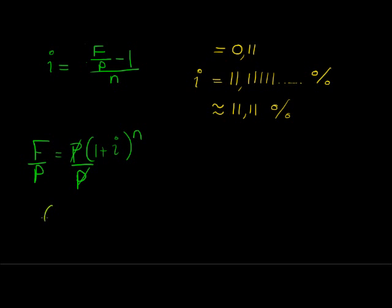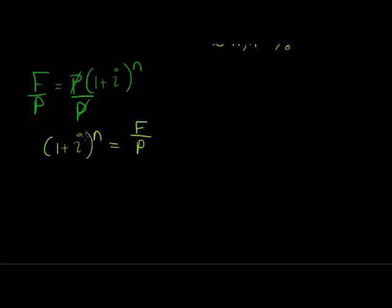So now I have that (1 plus i) to the power of n is equal to F over P. And now how am I going to get rid of this bracket? We have the bracket to the power of n. Well, we do the inverse of exponents: roots. So we'll take the nth root. But what I do on the left-hand side, I must do on the right-hand side, the nth root.